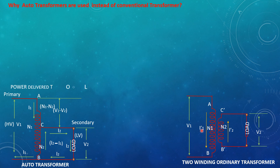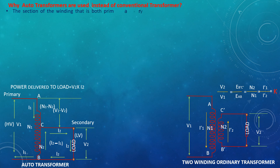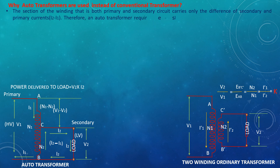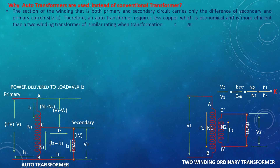The delivered load is equal to V2 × I2. The ratio V2/V1 = N2/N1 = I1/I2 = K. The section of winding that is in both primary and secondary circuit carries only the difference of secondary and primary currents I2 and I1. Therefore, an auto transformer requires less copper, which is economical, and is more efficient than a two-winding transformer of similar rating where the transformation ratio is high. A continuously varying voltage can also be obtained by using an auto transformer.